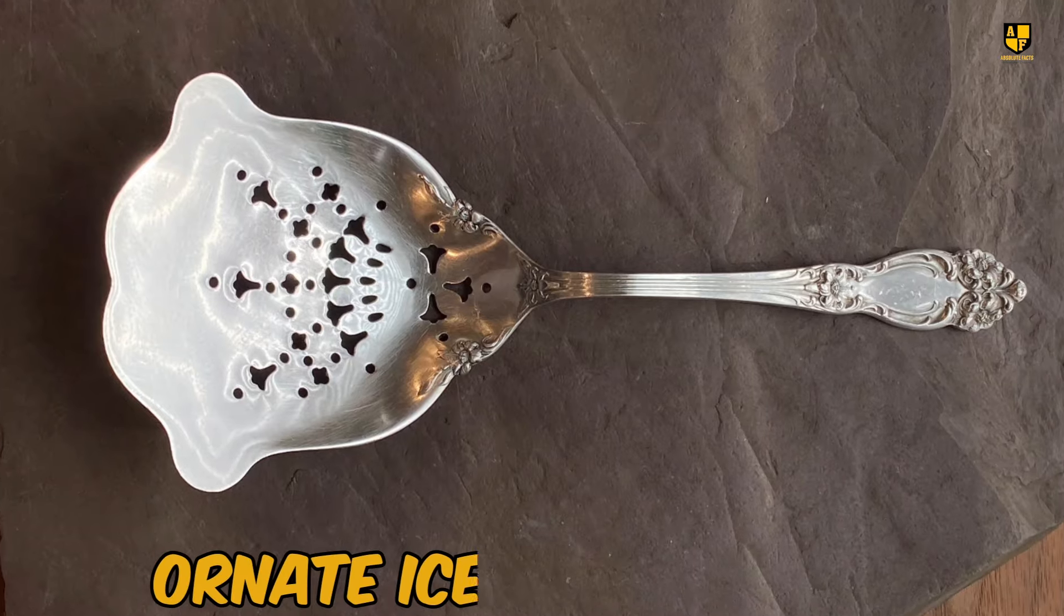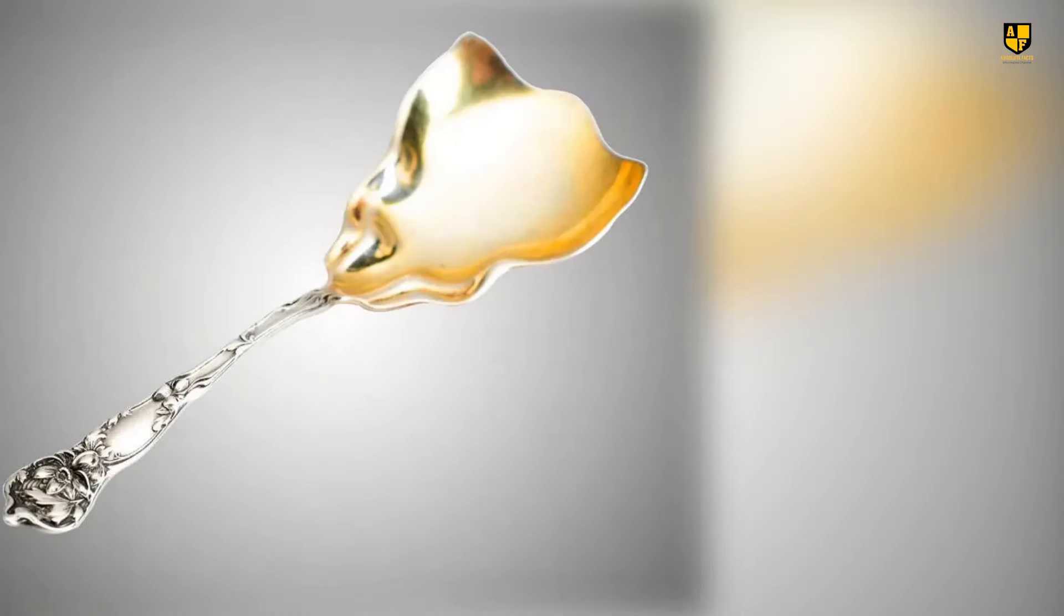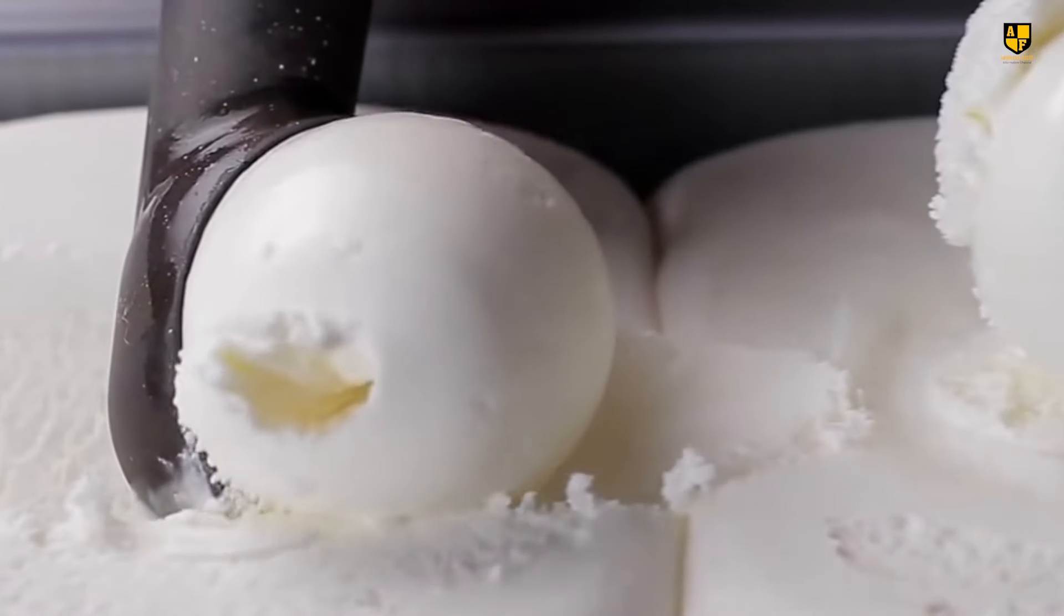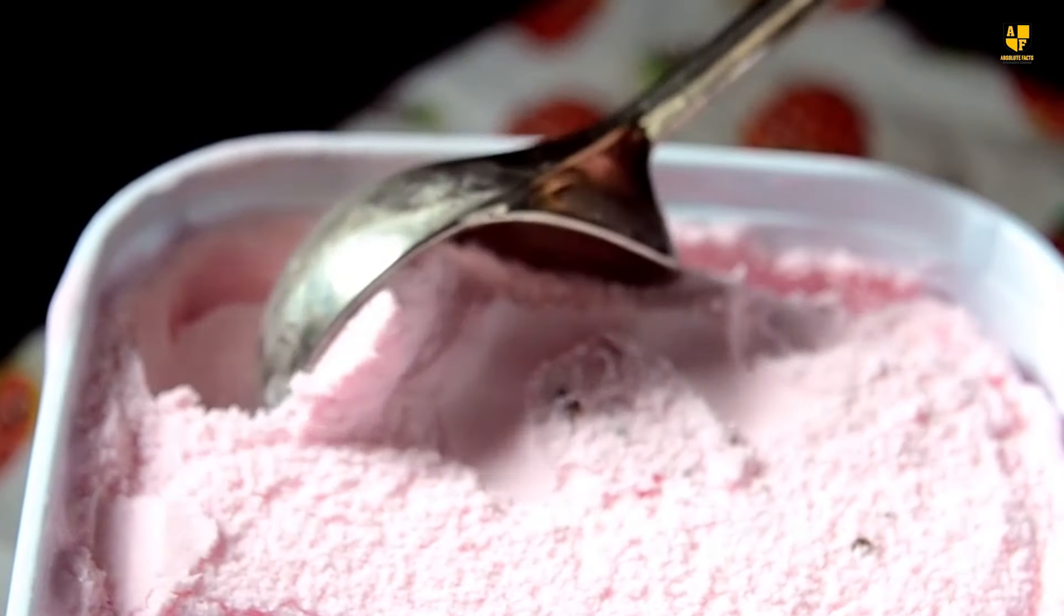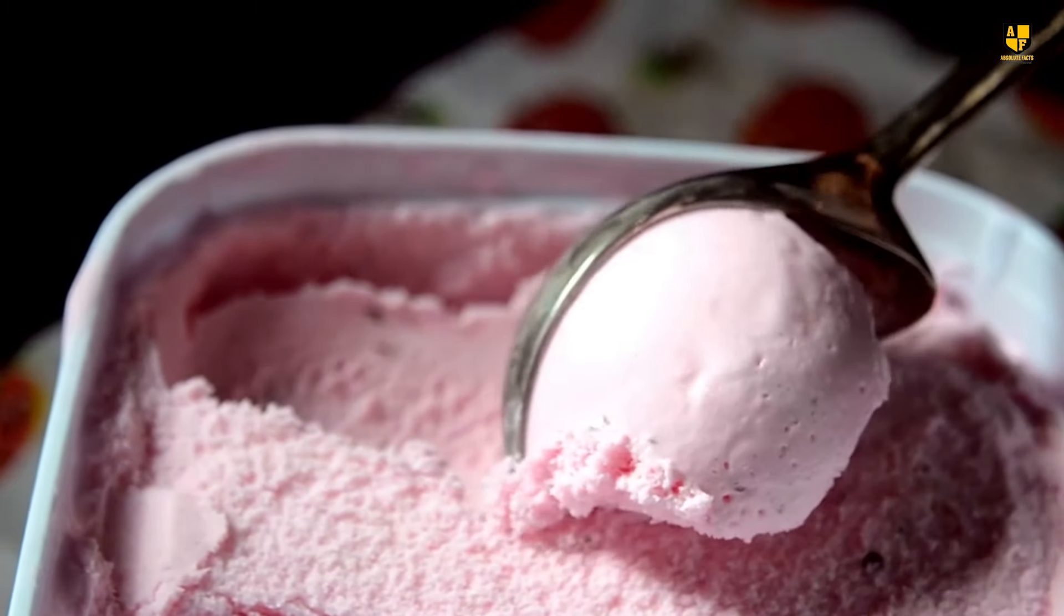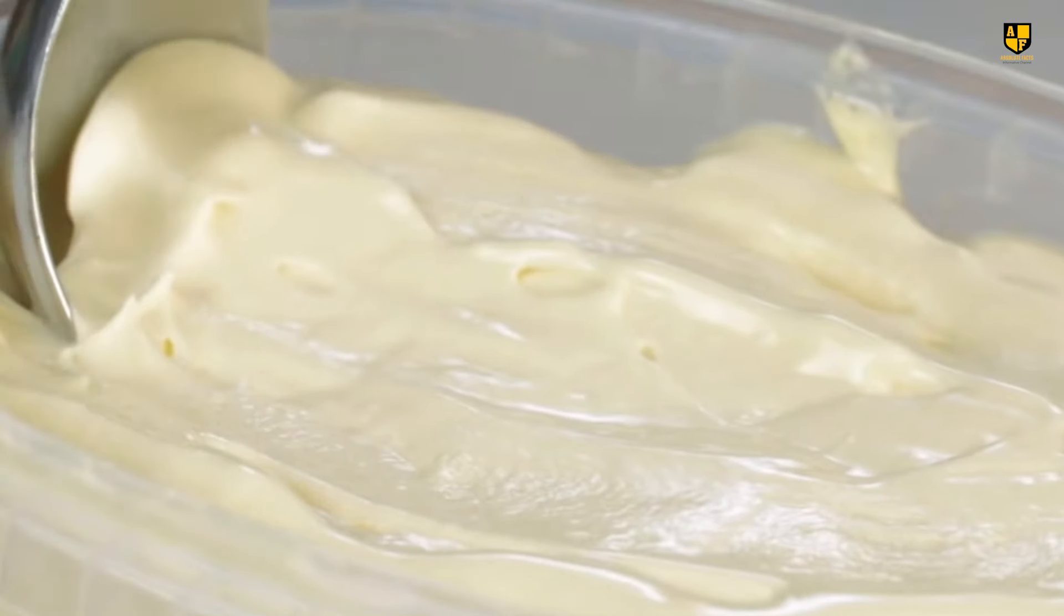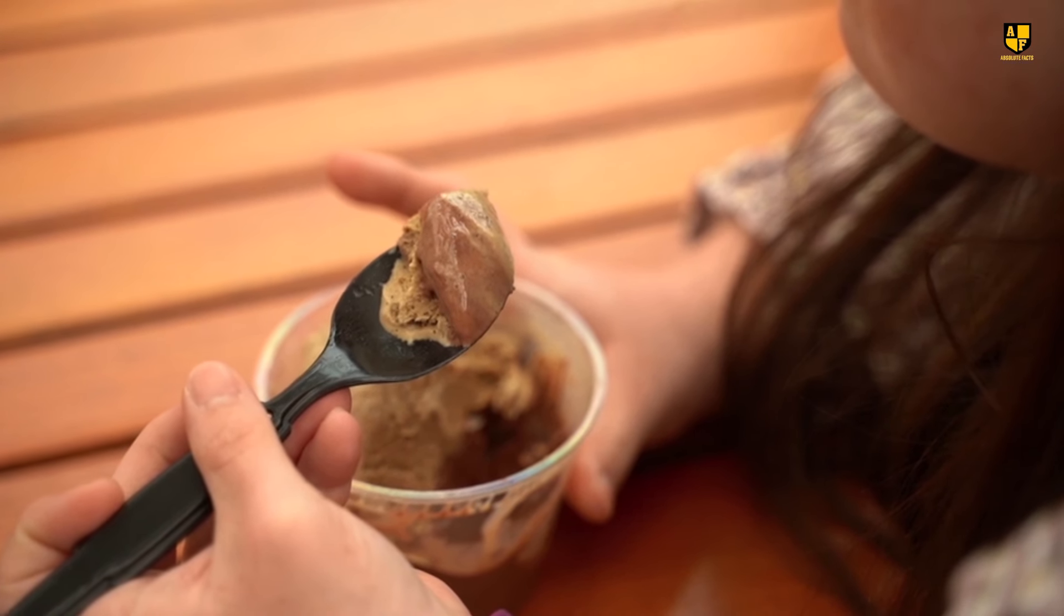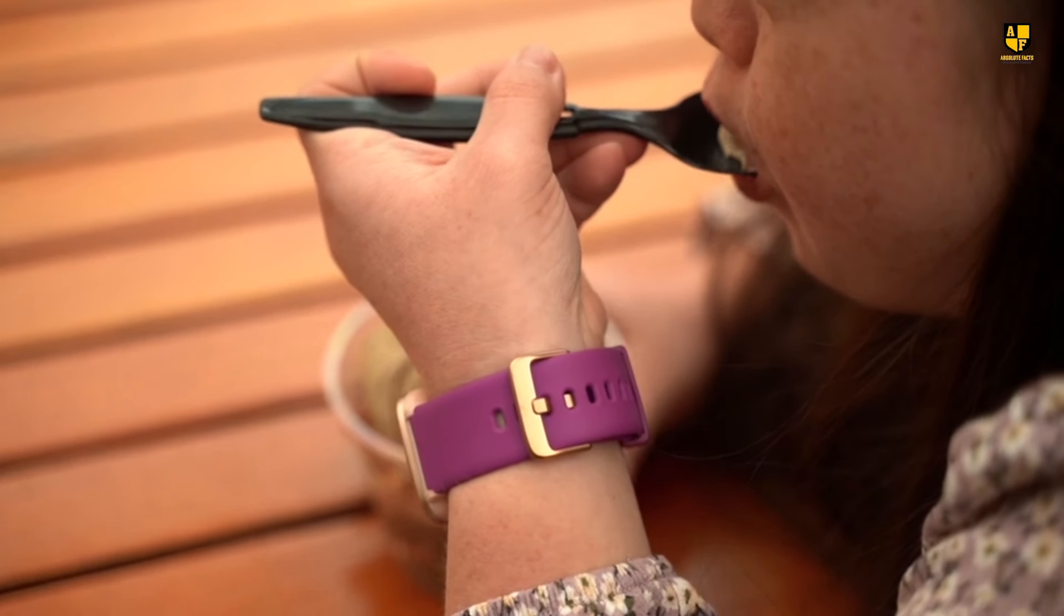Number 7. Ornate Ice Cream Scoop. What happens when practicality meets luxury? The answer lies in the ice cream scoops of yesteryear. Unlike today's plain designs, these tools were both functional and elegantly crafted, featuring intricate patterns and ornate details that reflected the fashion of the time. Their unique designs made scooping ice cream easier and more uniform, preventing it from sticking to the utensil. While the decorative details served no practical purpose, they transformed a simple kitchen tool into a statement piece of sophistication.